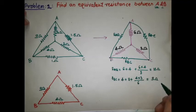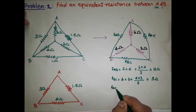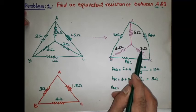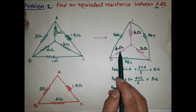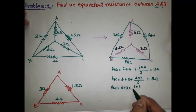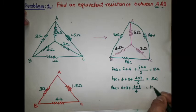Now finding RAC: between terminals A and C, 6 ohm and 3 ohm are connected. So RAC = 6 + 3 + (6 × 3) / 4, where 4 ohm is the opposite resistance, which gives RAC = 13.5 ohm.